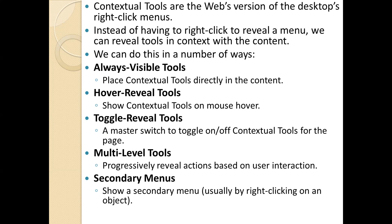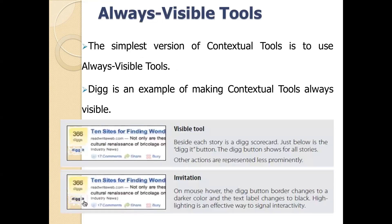When we say always visible, you place the context directly in the content. An example is a website called DIG. DIG uses always visible tools — all items and context are made visible all the time. You can click and perform operations, and all the menus are visible once the page is loaded. When you move your mouse over a particular label, the mouse pointer changes to show it is interactable, and you can click to move to the next page.